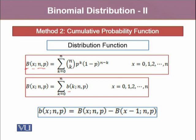You will notice another notation with small b, where small b within the brackets is K, N, and P. N and P are the parameters of the binomial distribution. Small b refers to the probability mass function. The probability distribution function of the binomial probability distribution can be given as the sum where K goes from 0 to N of the expression for the probability mass function.